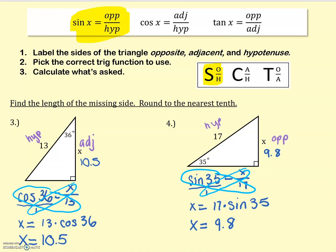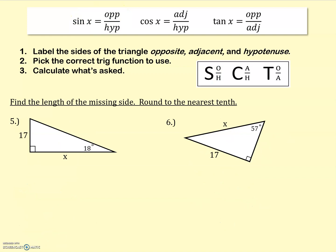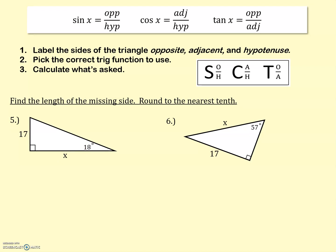Let's move on and do two more examples — a little bit different, but not too bad. We're asked to find the length of the missing side using our regular trig functions, rounding to the nearest tenth. In number five, we're given a 17, an x, and 18 degrees. Labeling all the sides: hypotenuse is across from the right angle; opposite of the 18 is 17; and adjacent to the 18 — but not the hypotenuse — is x. So we're using adjacent and opposite, which means we're using tangent.